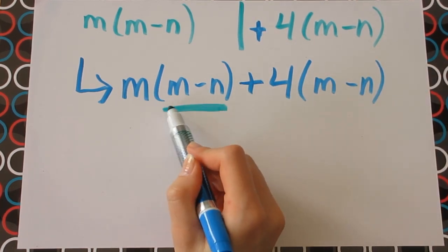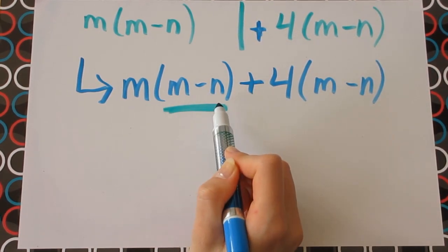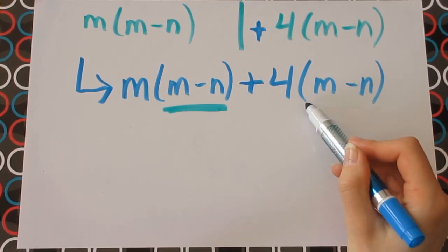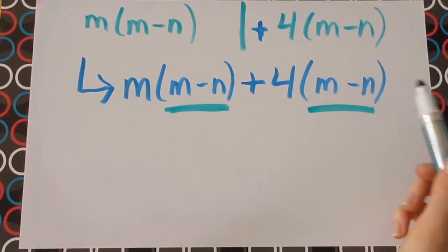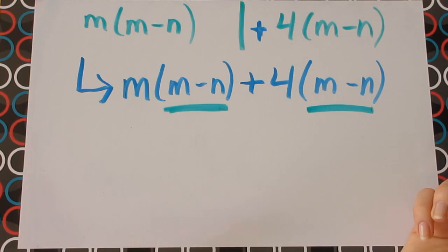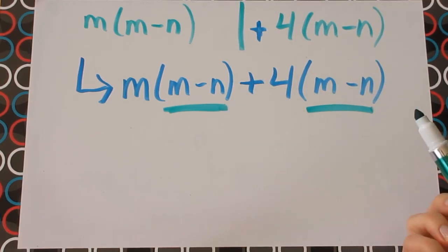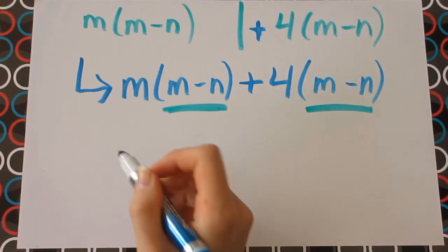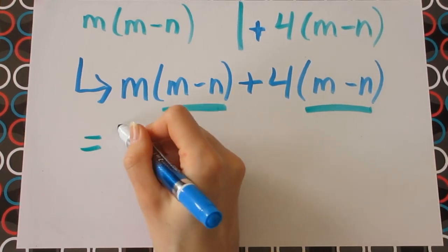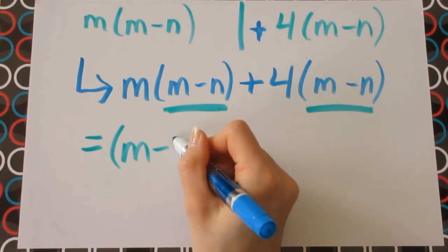What you should notice is that there's an m minus n in the first part of the equation, and another m minus n in the second part of the equation. So this means that m minus n is a common factor in both of these terms. So let's continue by factoring out that m minus n.